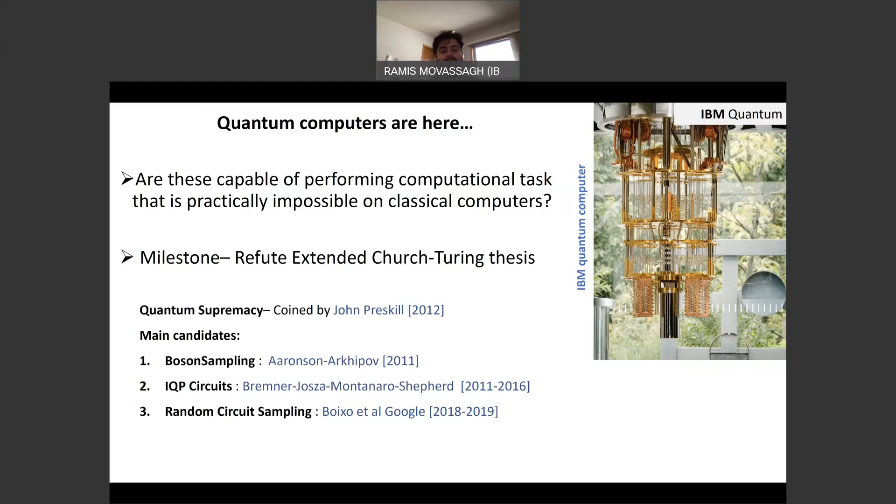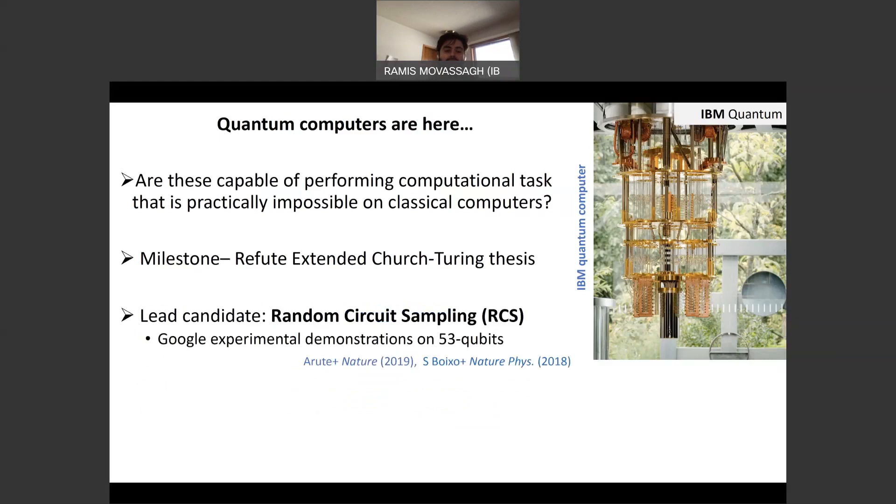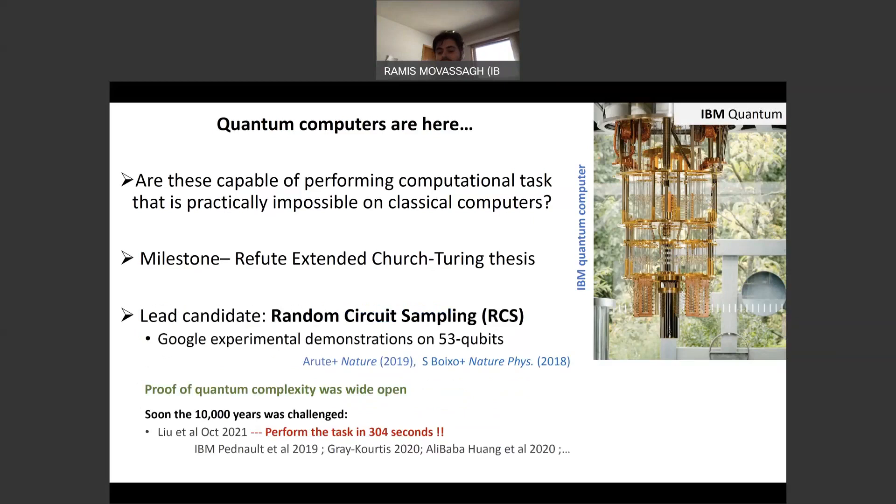The main candidates we have today are boson sampling, IQP circuits, which are a restricted model of quantum computation, and the encompassing model called random circuit sampling, which is what Google focused on recently and indeed is the lead candidate. Google demonstrated an experimental result for the sampling task on a 53-qubit device.